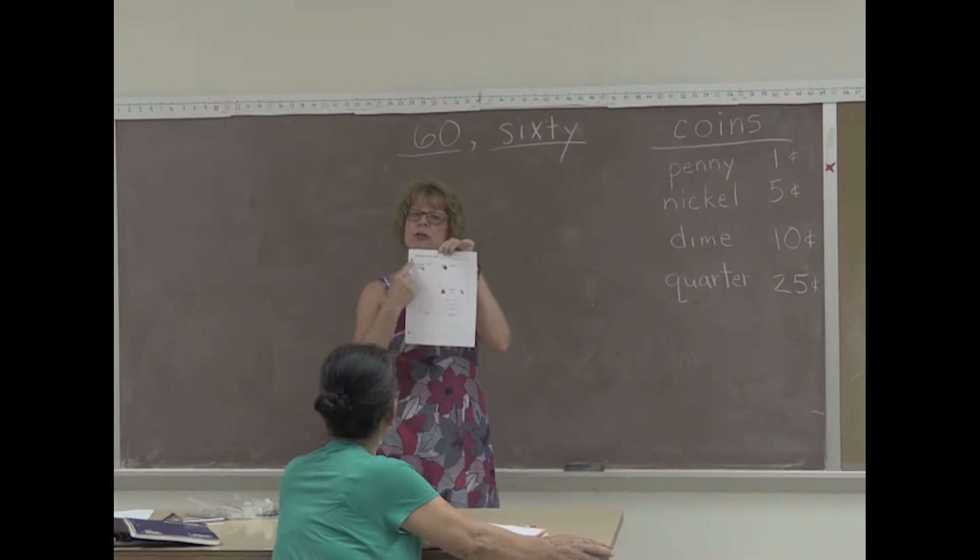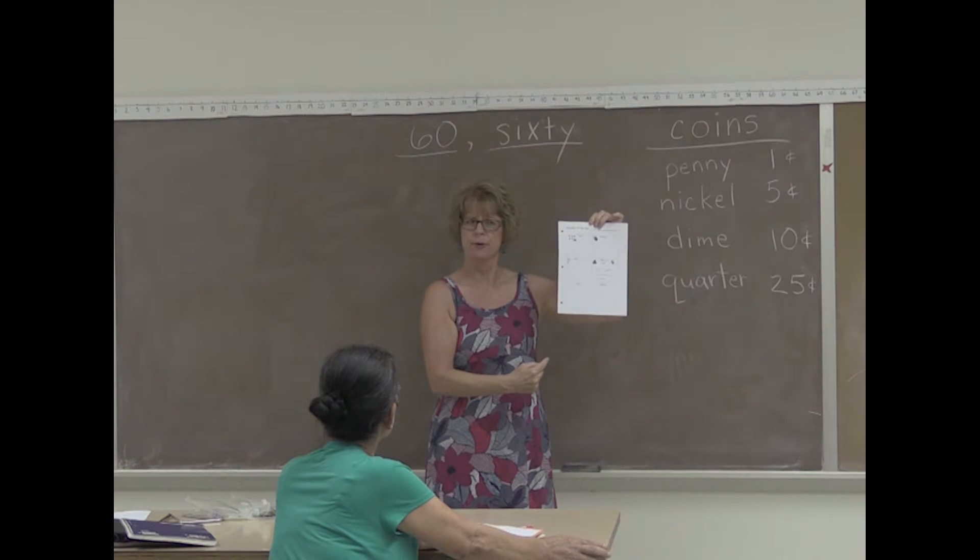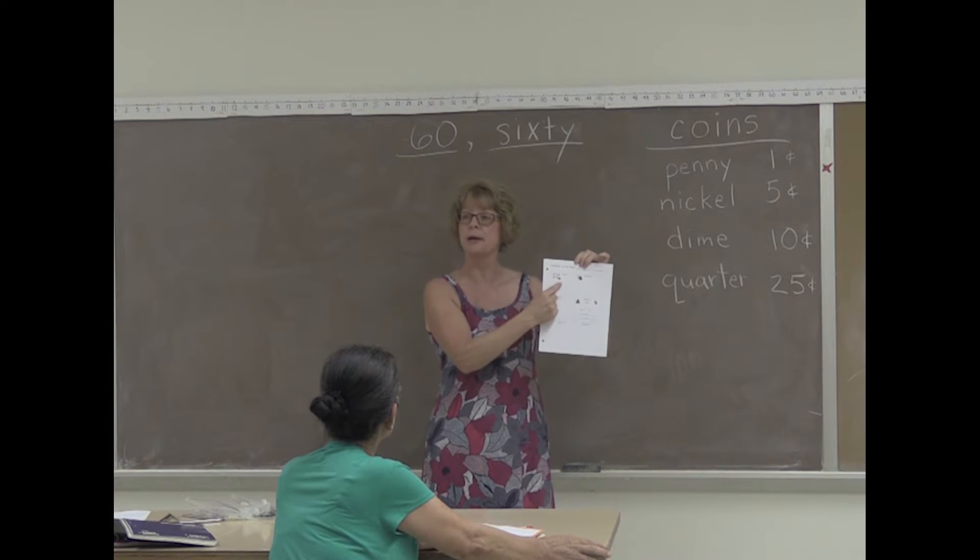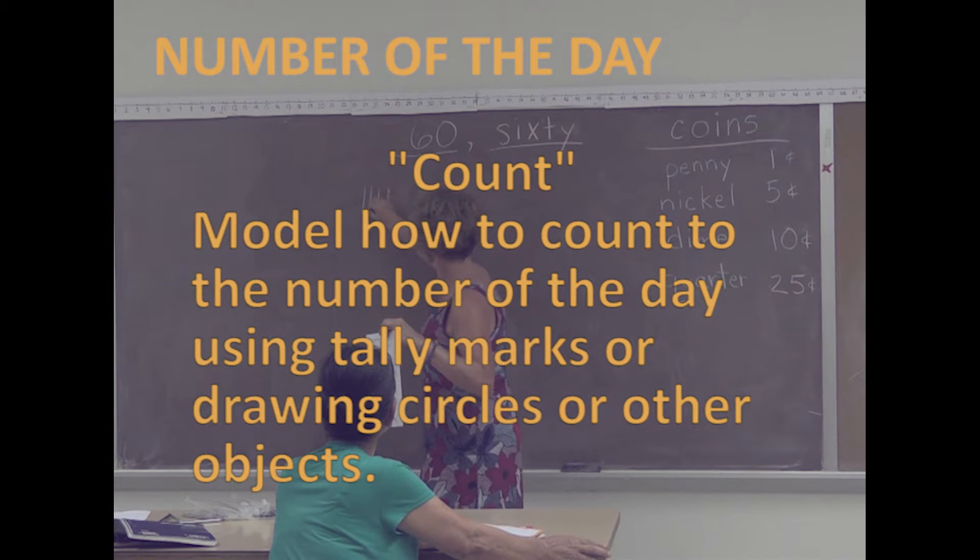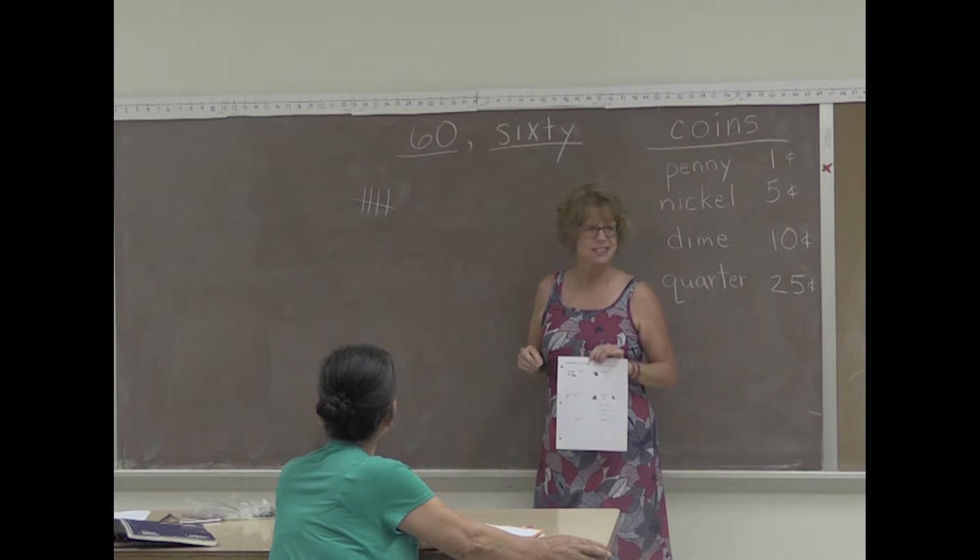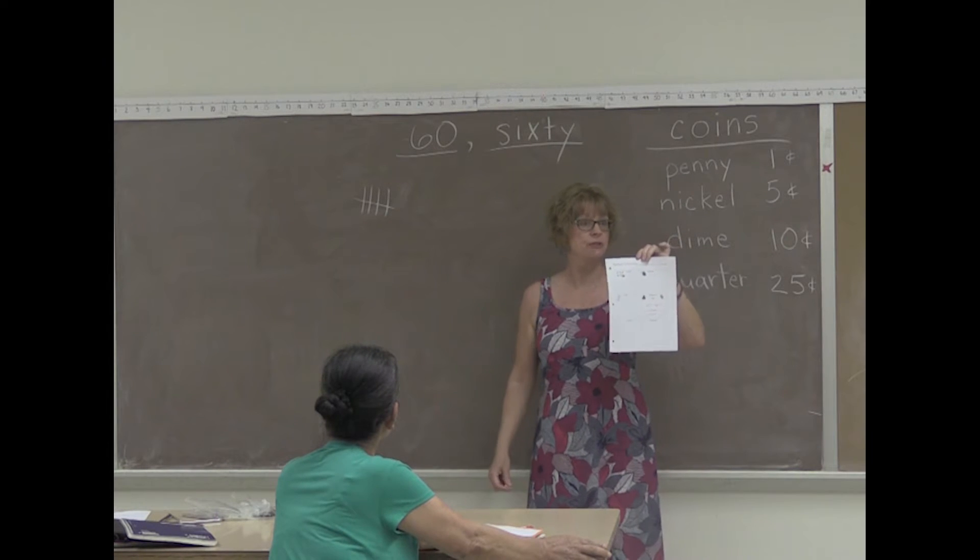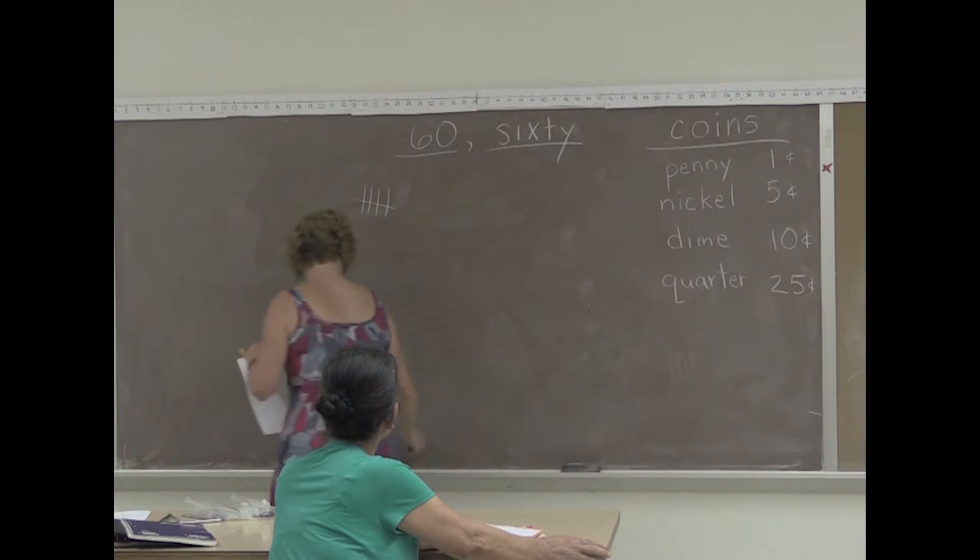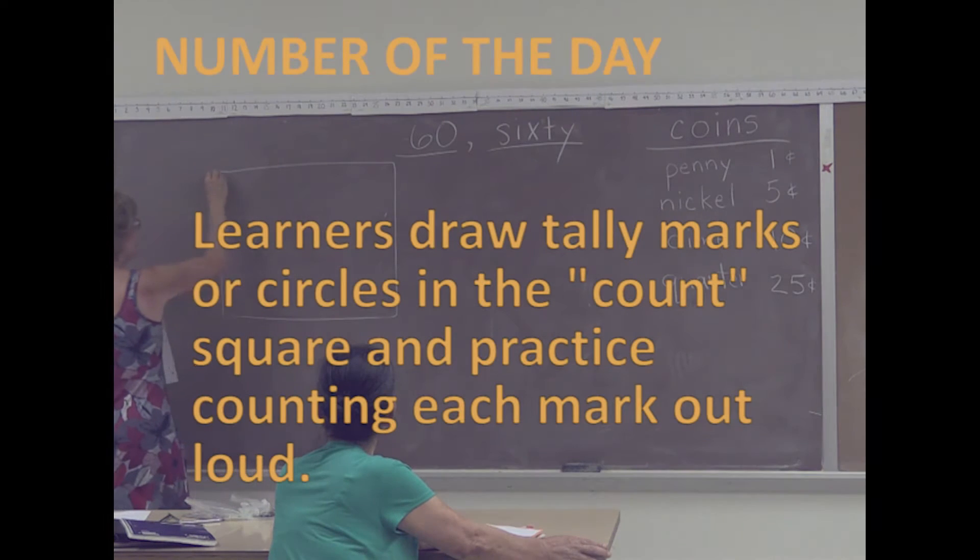So we're going to count in the first box. First of all, how many boxes on your paper? 1, 2, 3, 4, 5, 6. We're going to start with the box where you count by 5. You're right. What do we call that? Do you remember the word tally? So we are going to put tallies in the first box. We will count to 60 with the tallies.